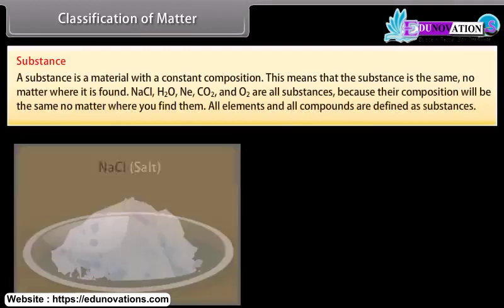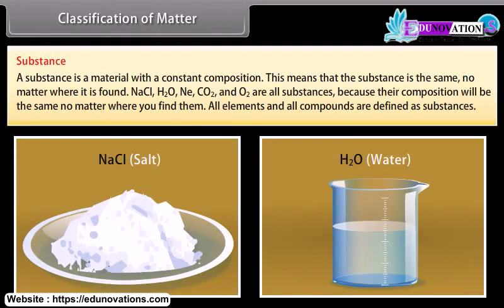A substance is a material with a constant composition. This means that the substance is the same no matter where it is found. NaCl, H₂O, Ne, CO₂ and O₂ are all substances because their composition will be the same no matter where you find them. All elements and all compounds are defined as substances.